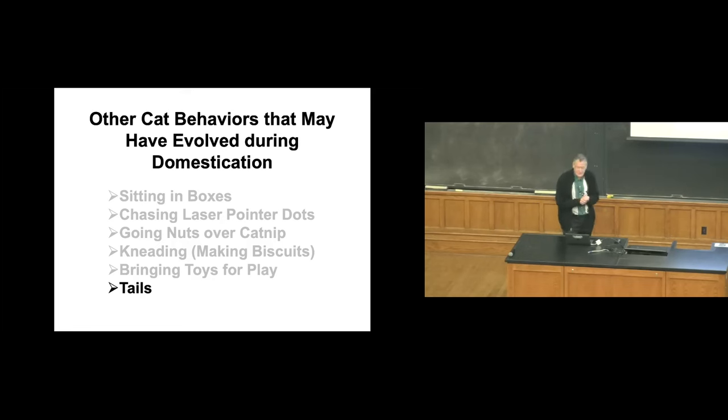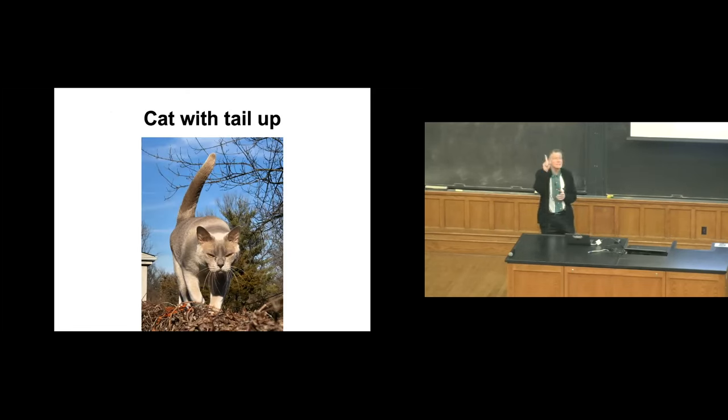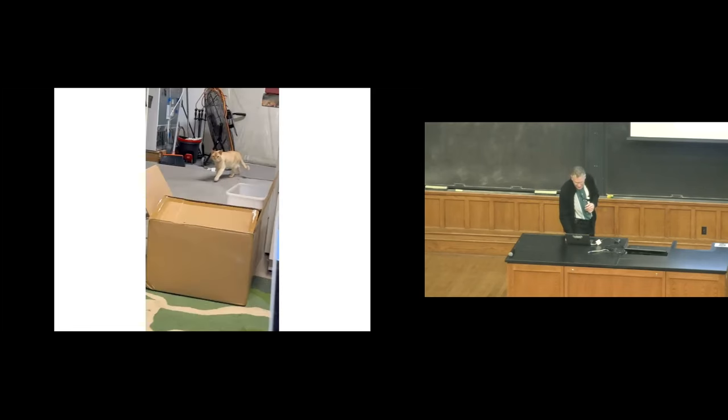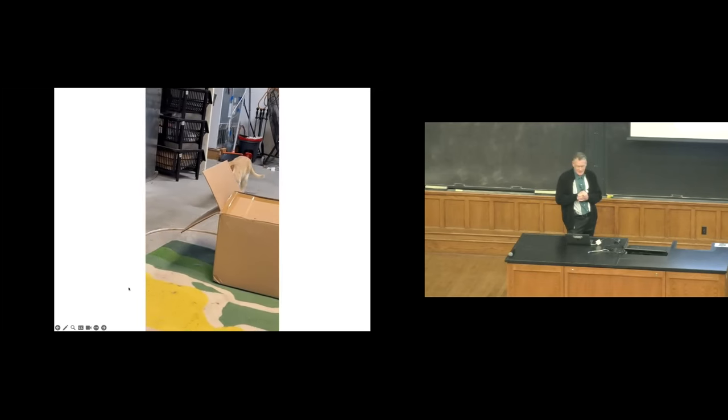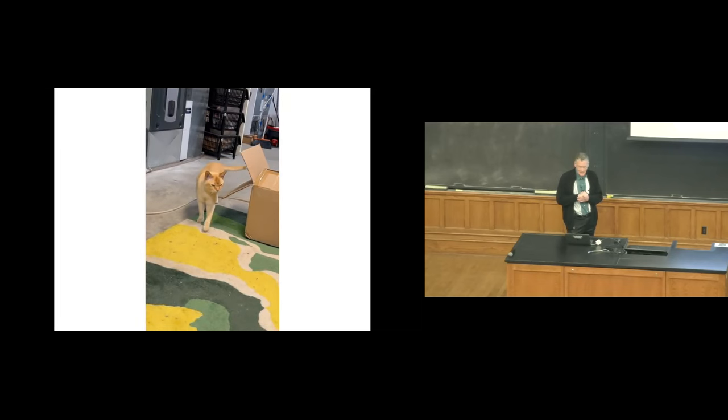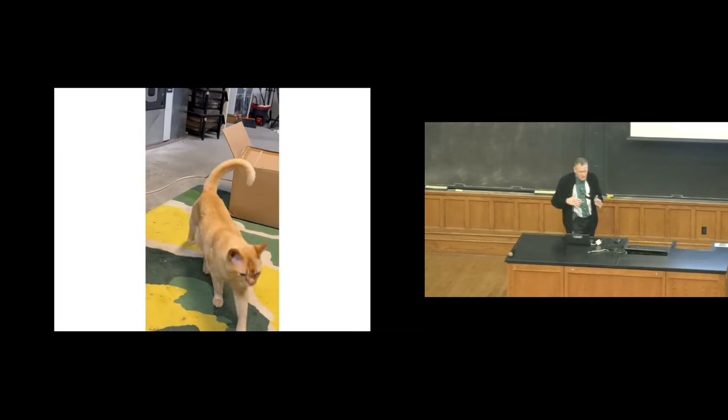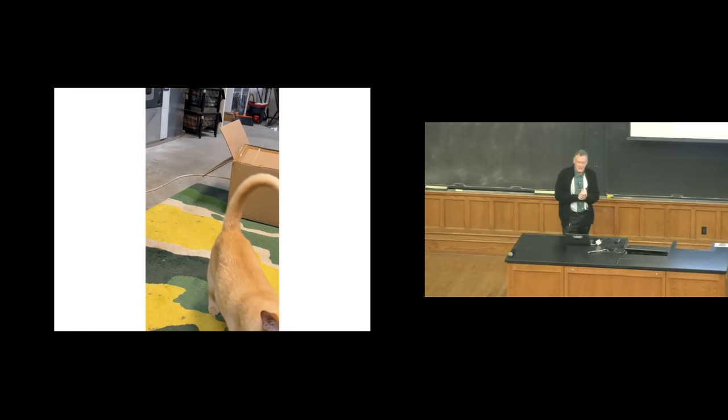So between bringing toys, making biscuits, purring and meowing differently, there are a few behavioral candidates for traits that have evolved during domestication. And there's one more that definitely has evolved, and that has to do with their tails. And in particular, it's this behavior here, sticking their tail up in the air. This is something that cats will do when they're approaching another cat or a person, and it is a sign of friendliness. It's saying, I come in peace. I want to be your friend. And so just to illustrate this, this is another of my cats. This is Archie.